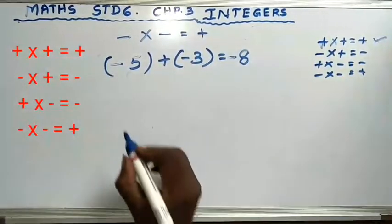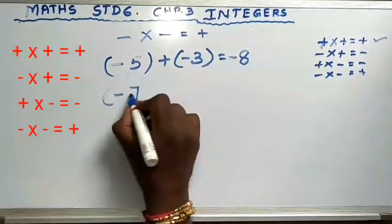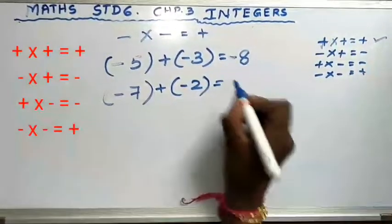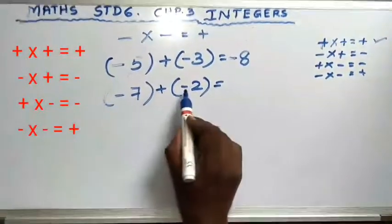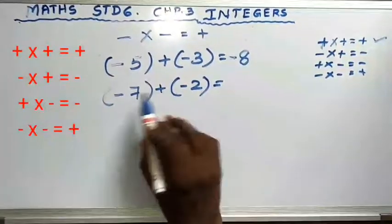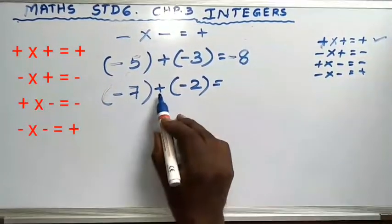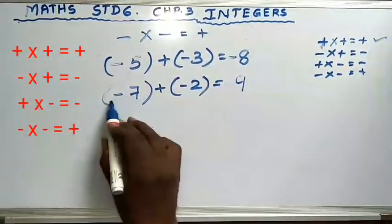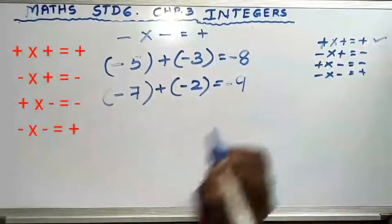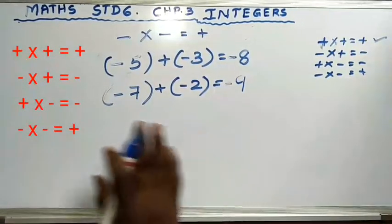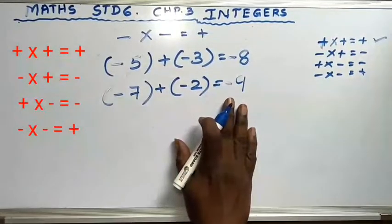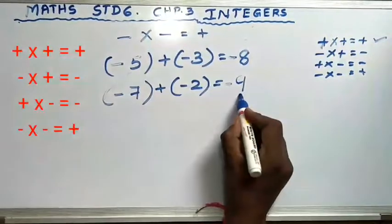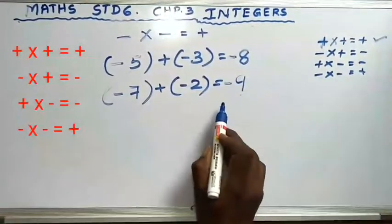Always remember: negative and negative — you add it, but while writing the answer you write a negative sign, because minus into minus is plus. Minus 10 plus minus 10: both sides negative — so 10 plus 10 is 20, and it is minus 20. Minus 5 plus minus 15: both sides negative, so you add 5 plus 15 is 20, both sides negative so write negative sign. Always remember this formula: when both sides are negative, add them but write the answer with a negative sign.